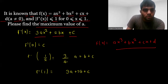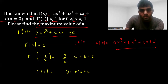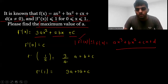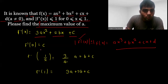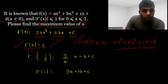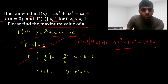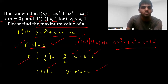We have to use this fact that |f'(x)| ≤ 1. We can use this effectively by putting different values of x. If you put x = 0, then f'(0) = c. If you put x = 1/2, then f'(1/2) = 3a/4 + b + c. And if you put x = 1, then f'(1) = 3a + 2b + c.